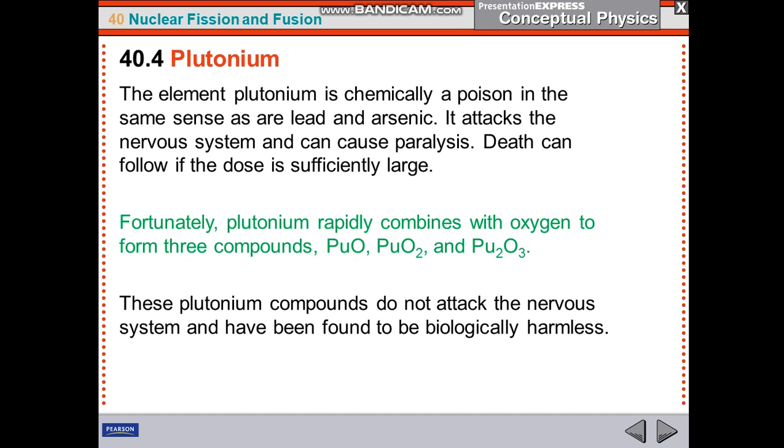Fortunately, plutonium rapidly combines with oxygen to form three compounds: plutonium oxide (PuO), plutonium dioxide (PuO₂), and plutonium trioxide (PuO₃). These plutonium compounds do not attack the nervous system and have been found to be biologically harmless.